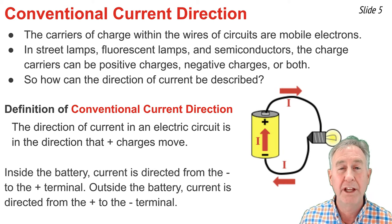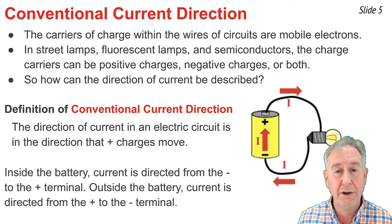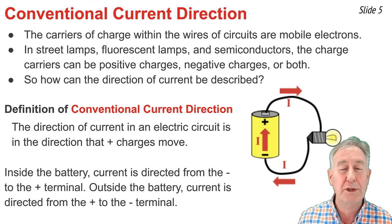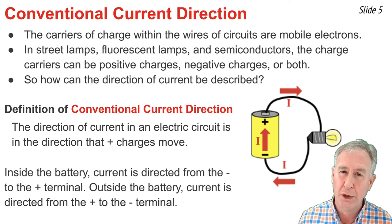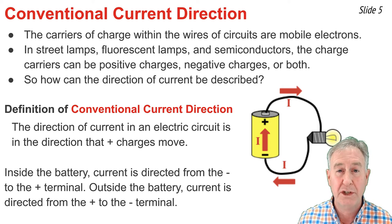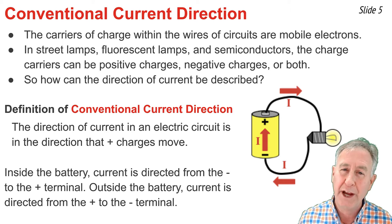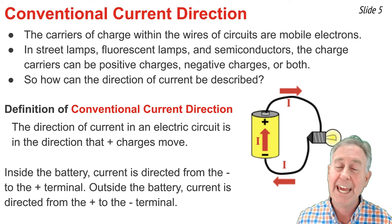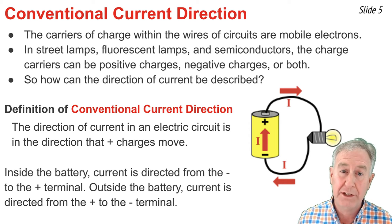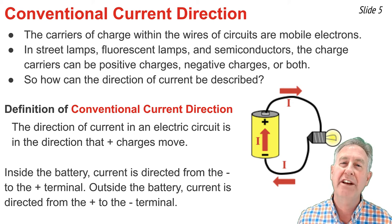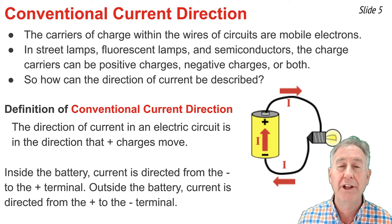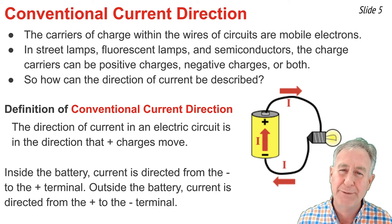Within the battery, the direction of current is from the negative terminal to the positive terminal. To be quite honest, we should probably call it from the minus terminal to the plus terminal, because after all, the idea is that charge is taken away or subtracted from one of the terminals and added to the other terminal, thus the minus and the plus. Outside of the battery, the direction of conventional current flow is from the positive terminal through the light bulb back to the negative terminal.